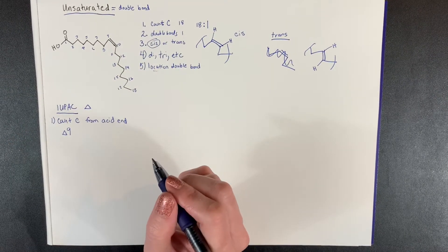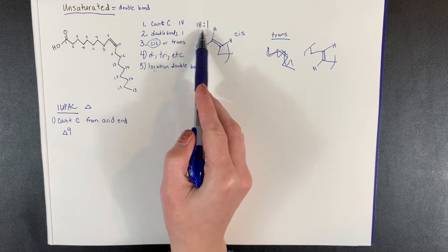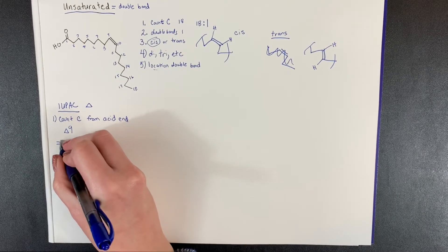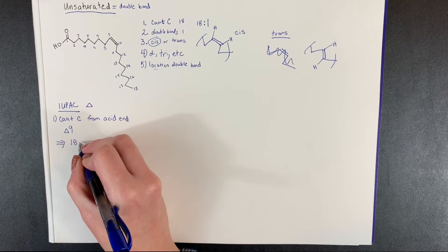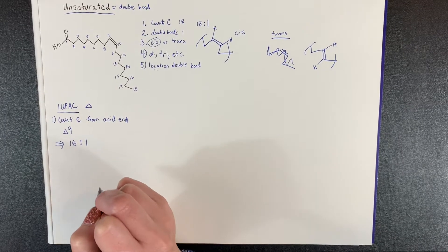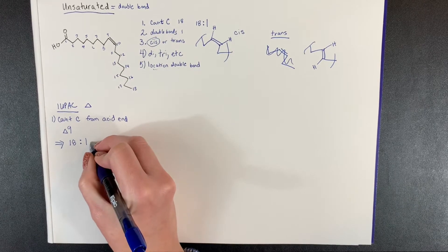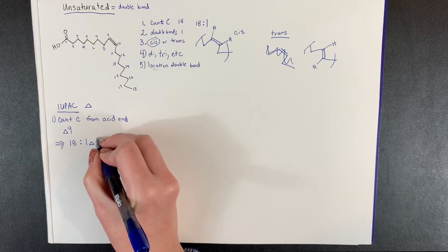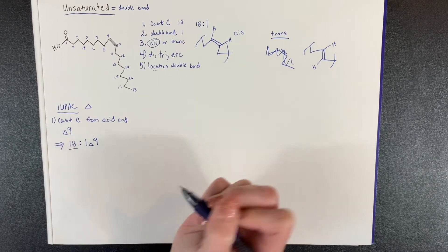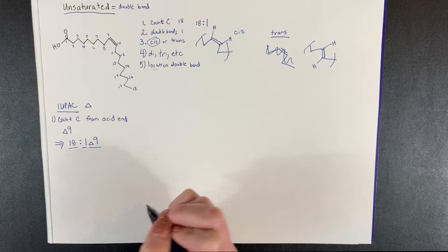If we want to represent this fatty acid using numerical shorthand, it becomes 18:1Δ9 — this tells us it's 18 carbons, there is one double bond, and it's at carbon nine.